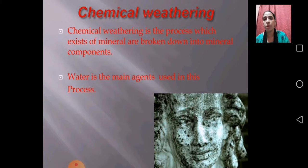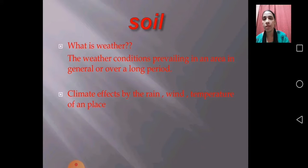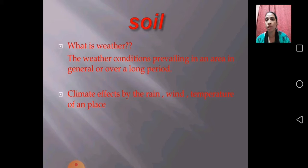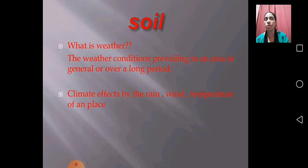What is weather? Weather is the condition prevailing in an area in general or over a long period of time. Climate effects — that is rain, wind, temperature of a place — play an important role. The soil of a place is affected by climate change: rain, wind, temperature, and all such factors.